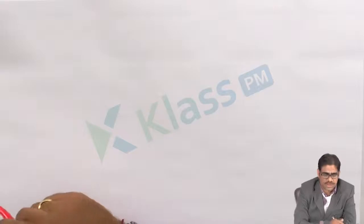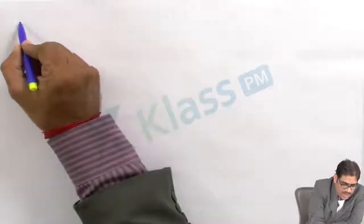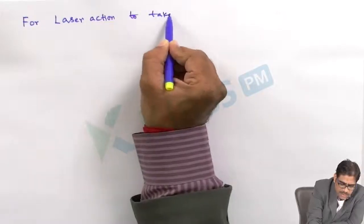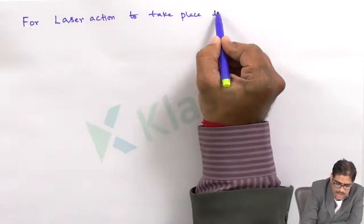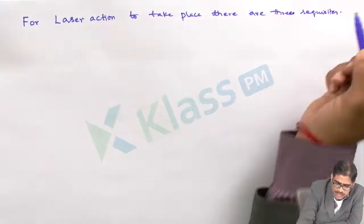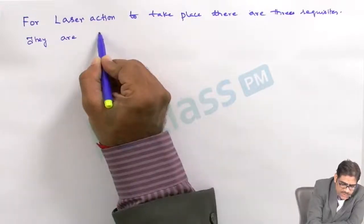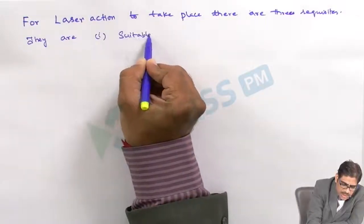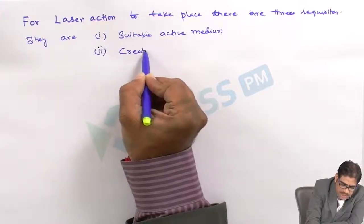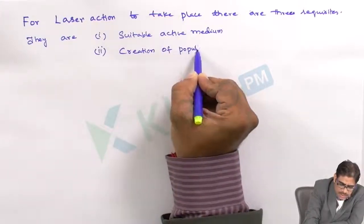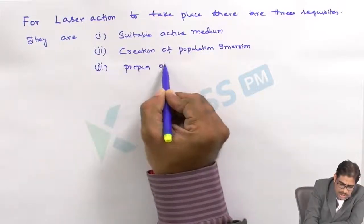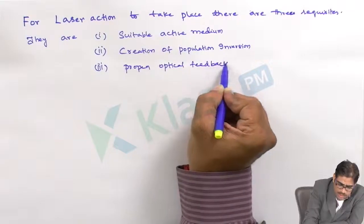For laser action to take place, there are three requisites. The first one is suitable active medium. Number two is creation of population inversion. And the third one is proper optical feedback.